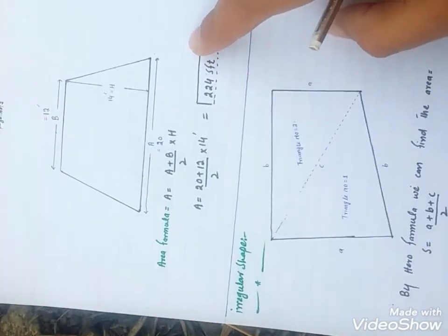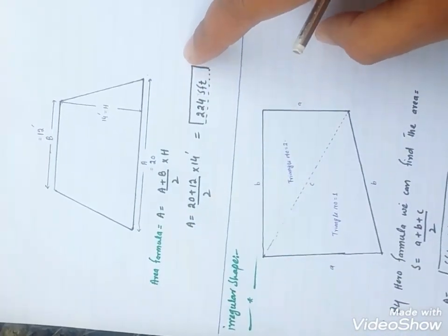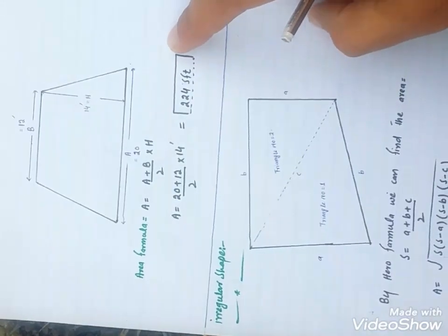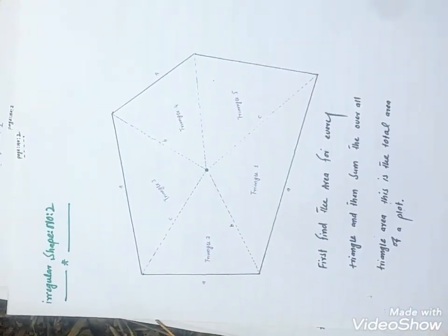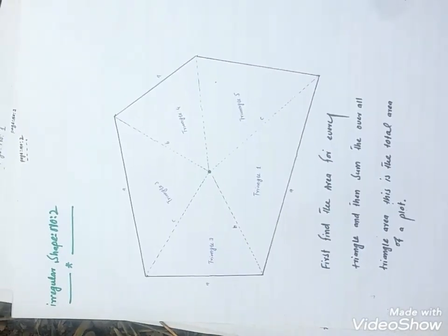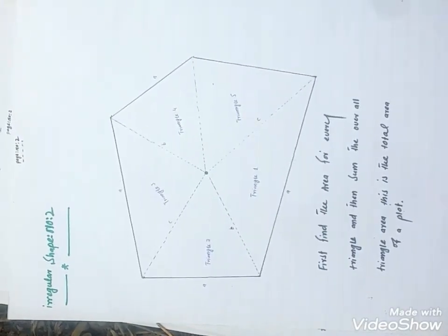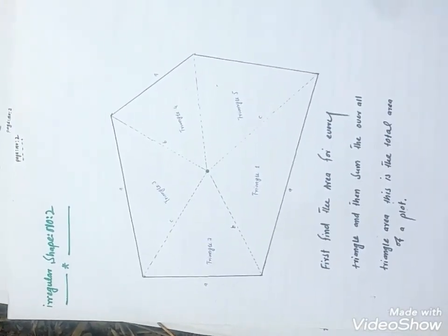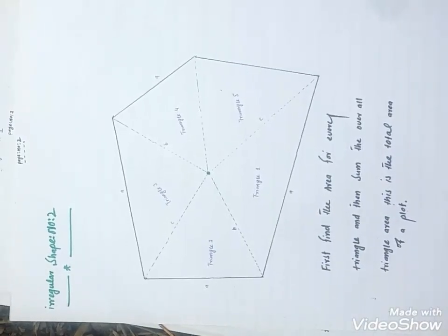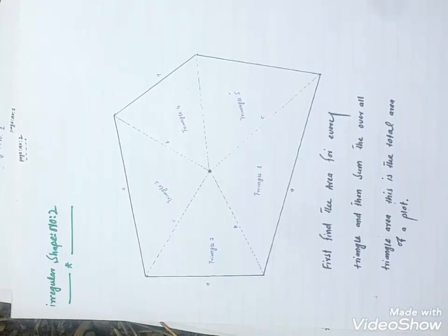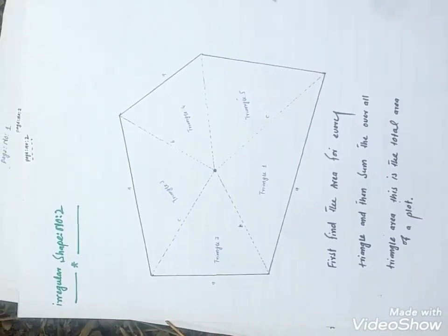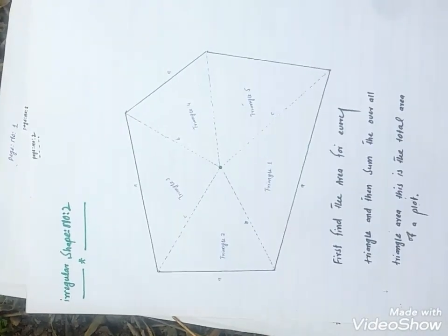The area formula for the trapezoidal shape is: Area = (1/2)(a + b) × h. This is another example of an irregular shape. For this type of shape, you first need to divide the area into triangles and then find the area of every triangle using Heron's formula. This is the end of the topic.